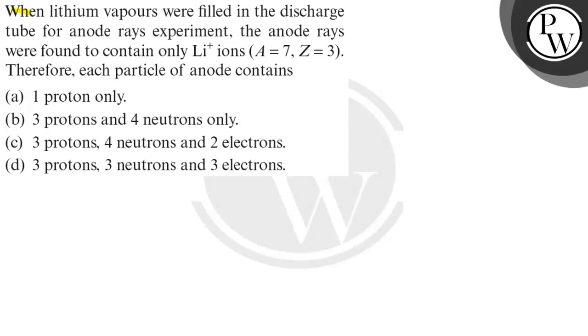Hello, let us read the question. When lithium vapors were filled in the discharge tube for an anode rays experiment, the anode rays were found to contain only Li plus ions. Mass number A is equal to 7 and Z is equal to 3. Therefore, each particle of anode contains what?